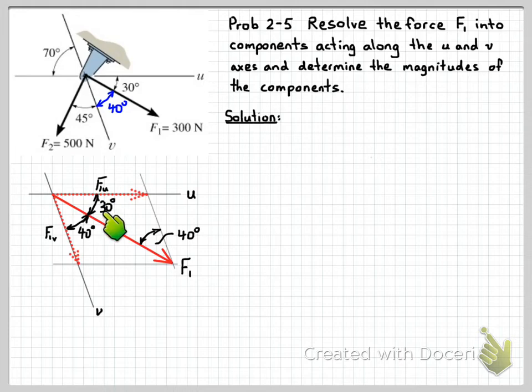From our information given, we know this angle is 30 degrees. And from the sum of the internal angles of a triangle adding up to 180, we can see that this angle in here is 110 degrees.